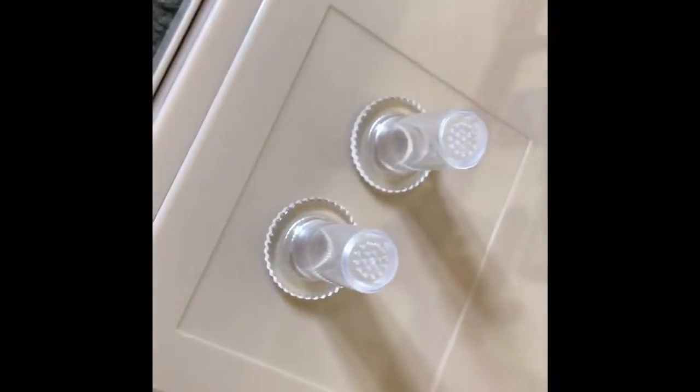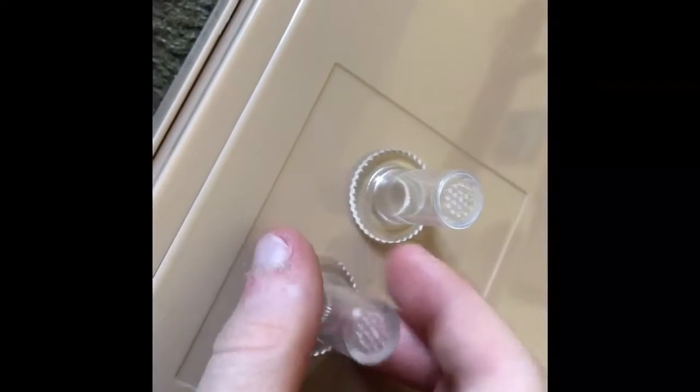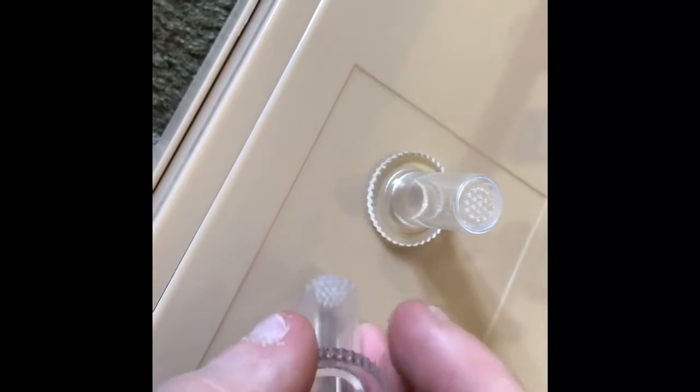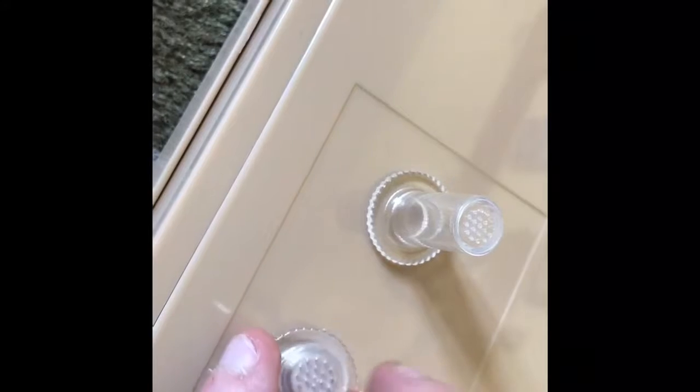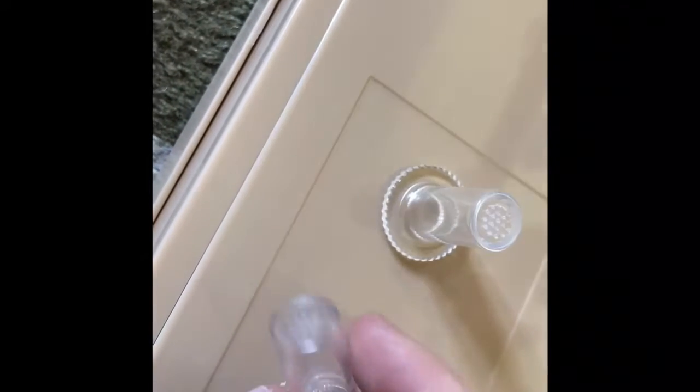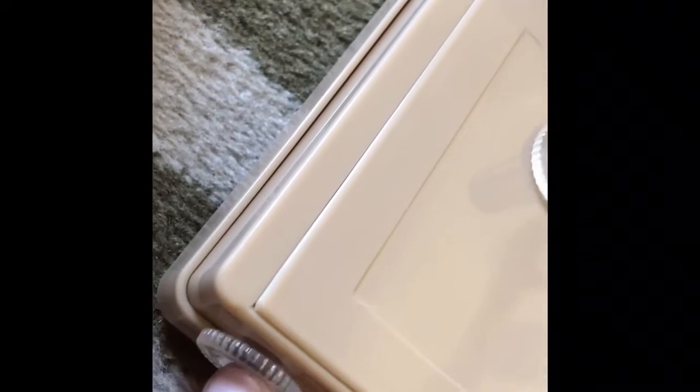The next thing that you're going to find extremely useful, if you're an ant keeper, is these plugs. They have ventilated tubes, so they pretty much replace cotton. And they can be used to plug entrances on your hybrid nest.